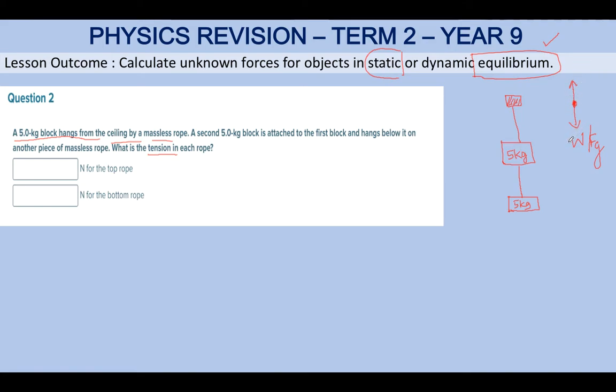Since it's not moving, these forces must be balanced. If you just had only the 5 kg, it's easier - just calculate weight and equate it to tension. But here, there are two objects. The first rope should be holding both objects, so the tension in this rope will be much greater than the tension in the second rope, which is only holding one object.